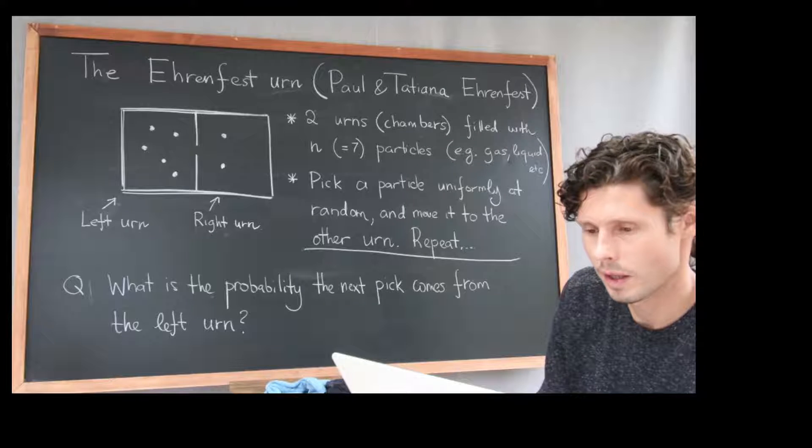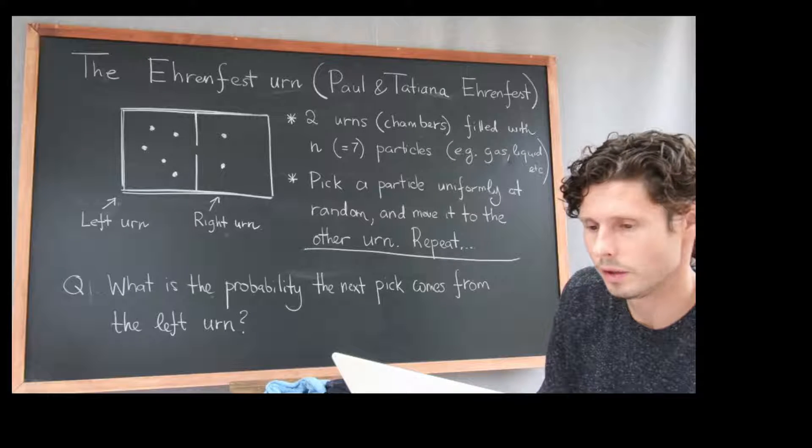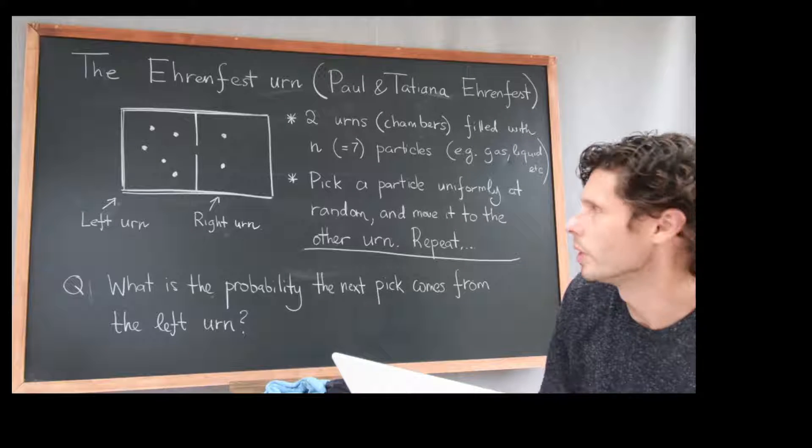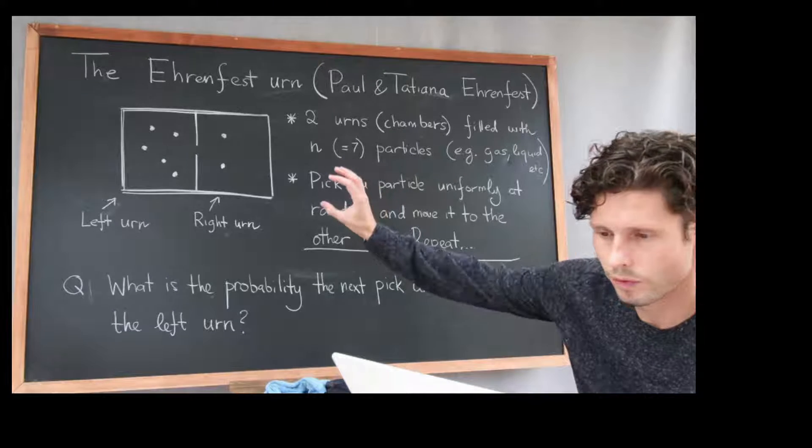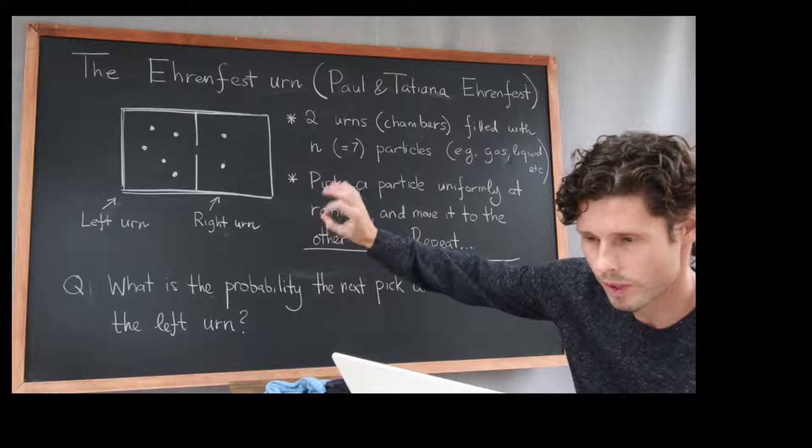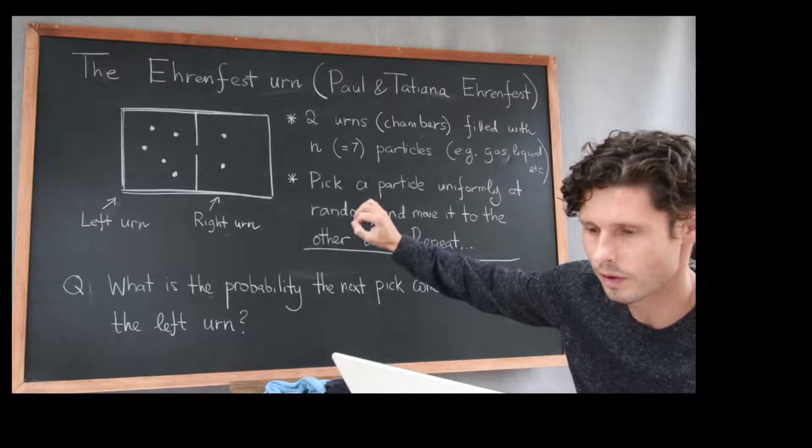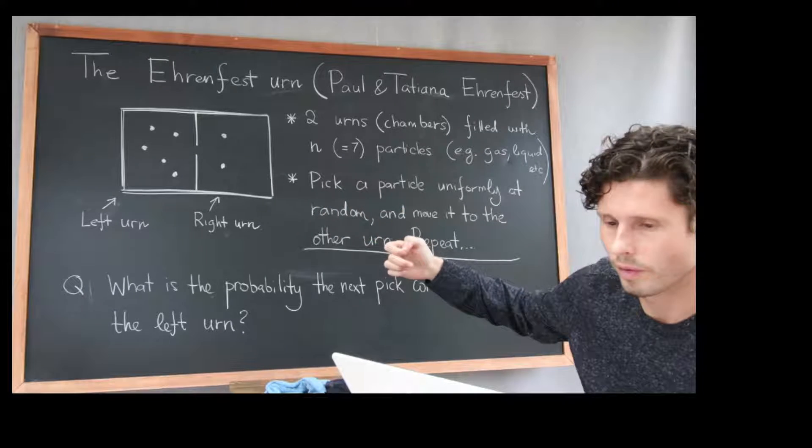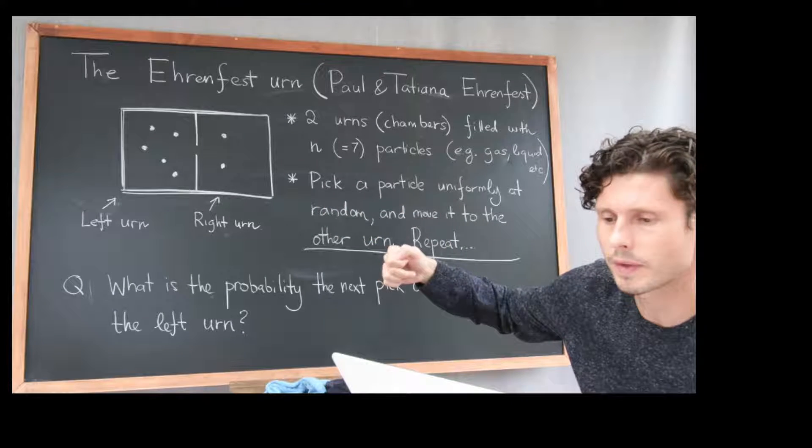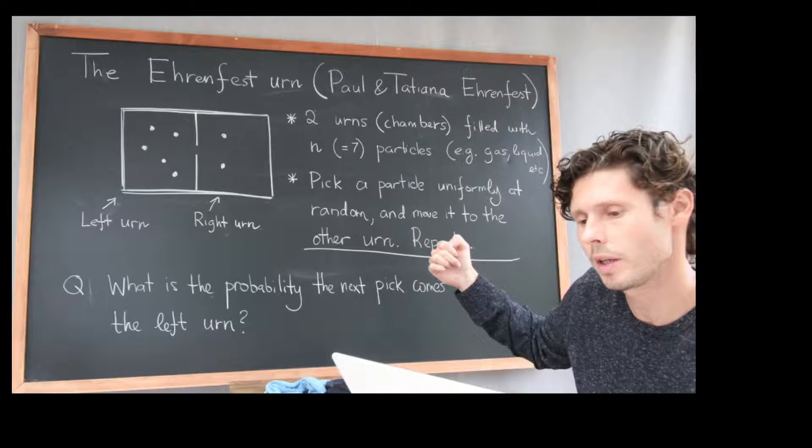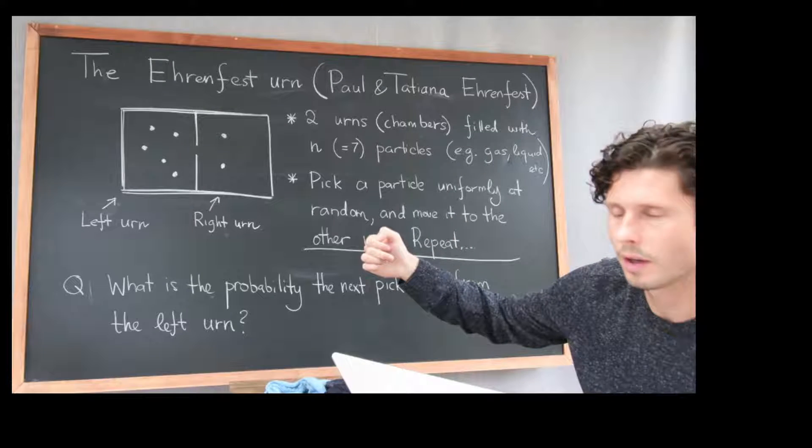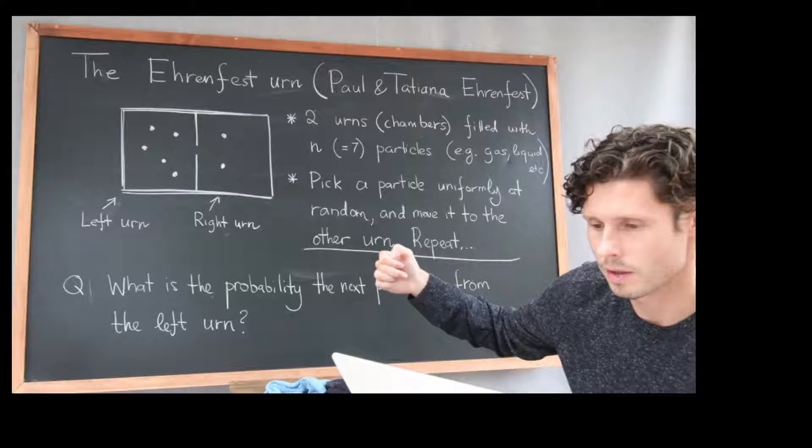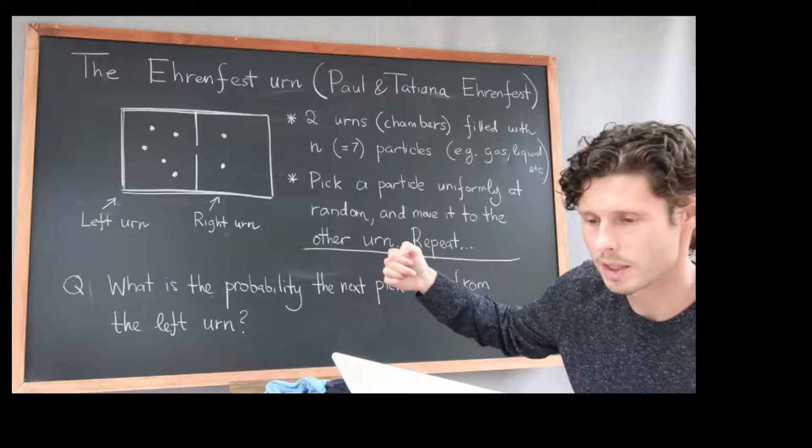Remember each particle is selected uniformly at random. What's being asked here is what is the probability that the next time I move over there and erase one of these particles to move it to the other urn, what's the probability I move it from the left to the right? Once I pick it from the left it has to be moved to the right, if I pick it from the right it has to be moved to the left. Hopefully you can answer this question, that should be a pretty easy one, an easy warm-up problem.